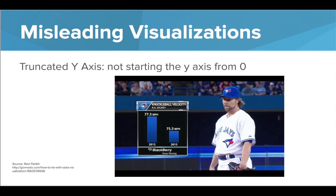In the same way, this picture has only dropped two miles per hour in speed for his knuckleball. The second bar looks like it's half of the first one though — they've made it seem like the change was drastic when it really wasn't.